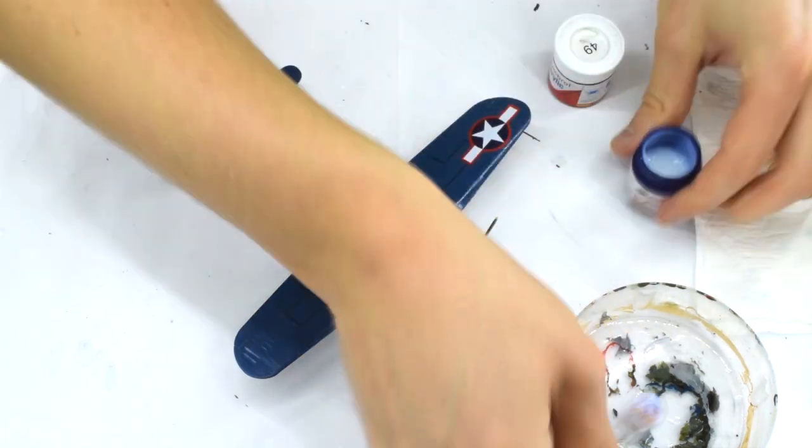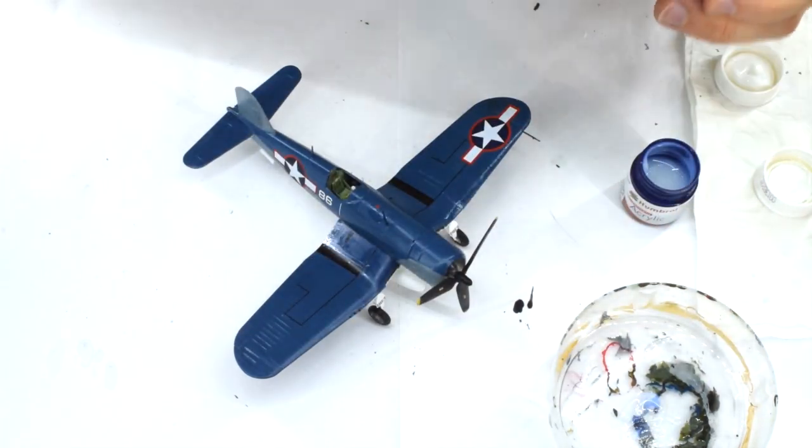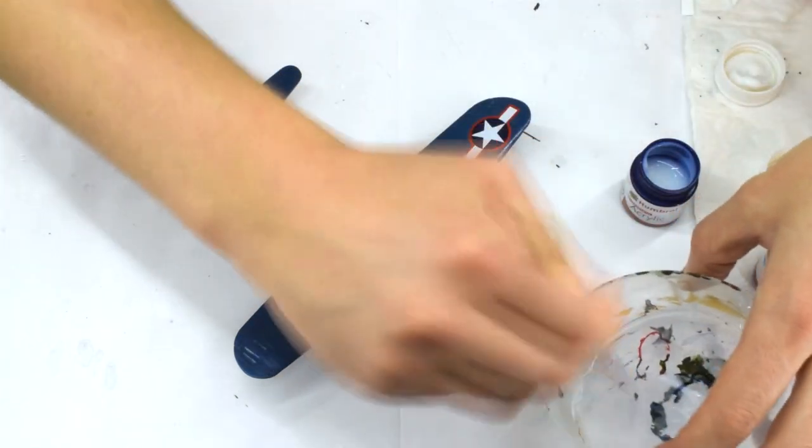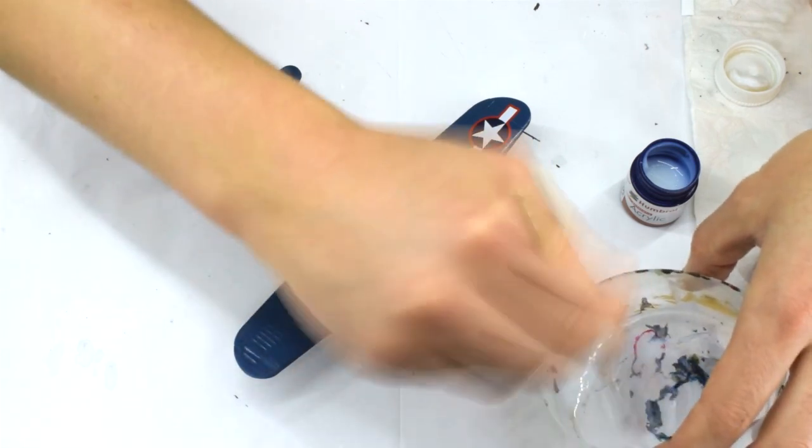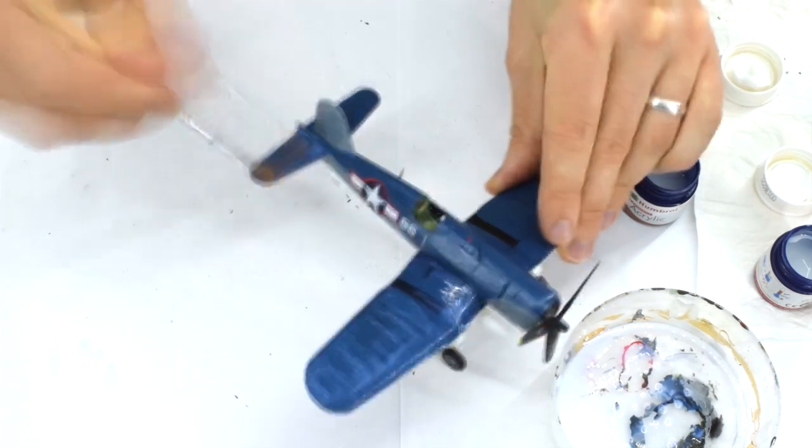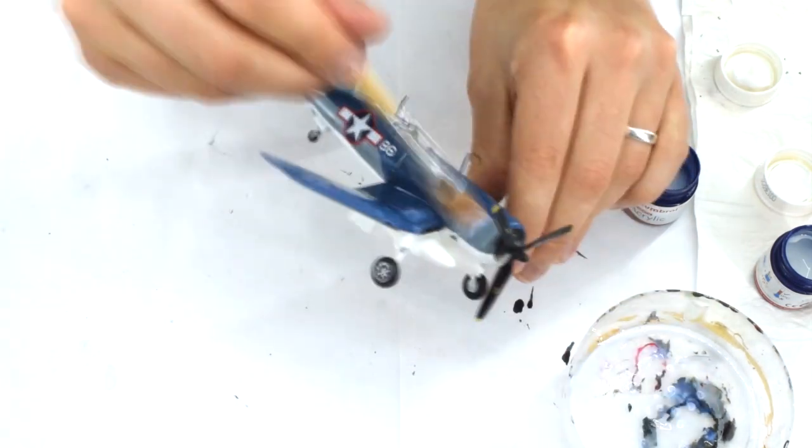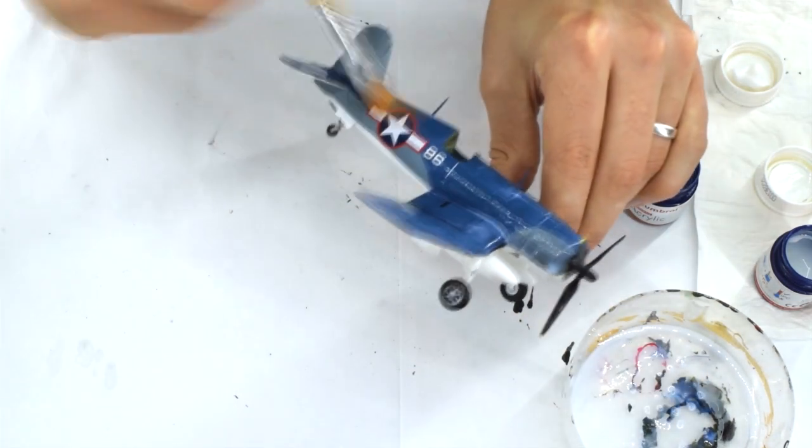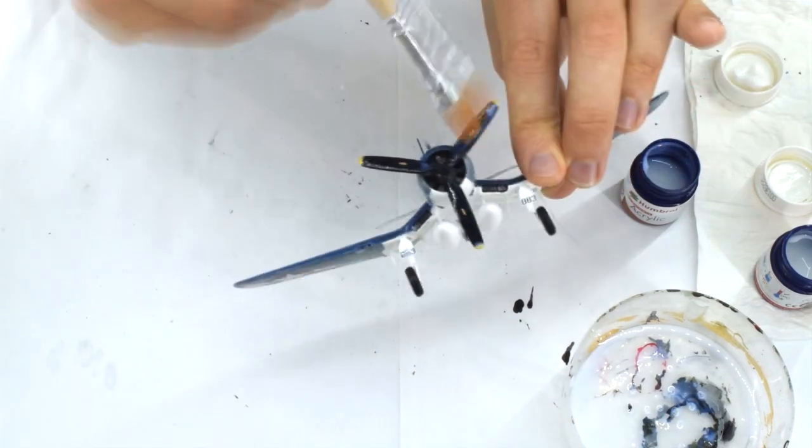Humbrol 135 satin varnish and 49 matte varnish were mixed together. I do this as the matte varnish on its own leaves a white residue. Mixing them prevents this, but still results in a reasonable matte finish. I thinned this mix with a little water and applied it to the entire model.